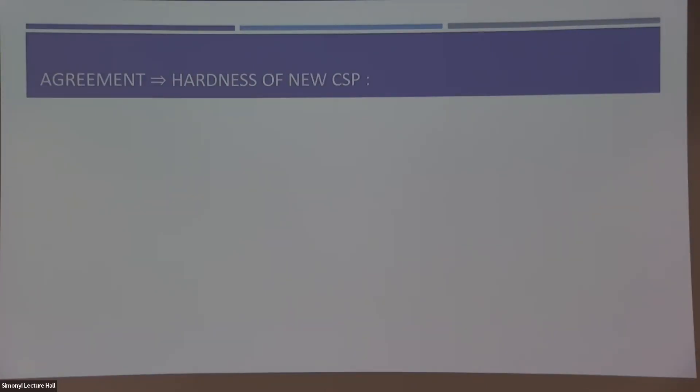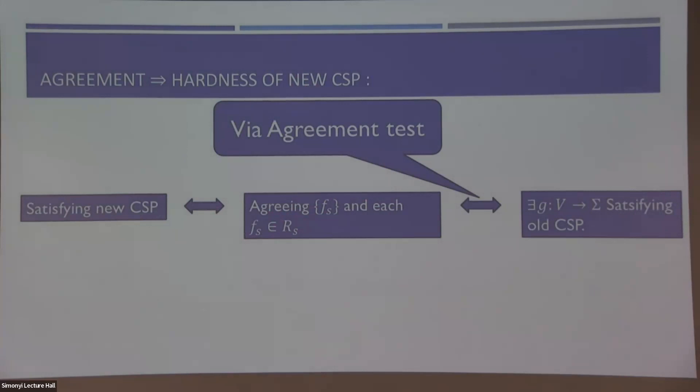So why is this a good idea? Why is hardness retained? Suppose that we somehow satisfy the new CSP or somehow found an assignment that satisfies most of the new constraints. What did this mean by definition? Well, actually, it means that we found a set of local functions. First of all, at least most of them satisfy the old constraints. And second of all, they're consistent. They pass this agreement test with good probability. Otherwise, they wouldn't satisfy a bunch of constraints. By soundness of agreement tests, we can show that this is if and only if there actually exists a function on the old variable set that agrees with many of these f of s's entirely. And if they agree with many of the f of s's, then in particular, it must satisfy the constraints that these local functions satisfy too. Therefore, it is also a very satisfying assignment to the old CSP.